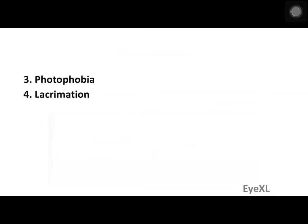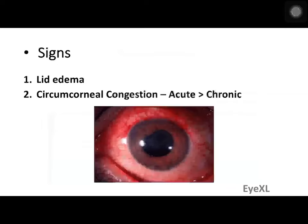The next symptoms are photophobia and lacrimation. On examination, even before reaching the eye, the patient could have lid edema, followed by circumcorneal congestion — a continuation of hyperemia of the anterior ciliary arteries. Circumcorneal congestion is more often seen in acute cases. In chronic uveitis, very often the patient has a white eye.